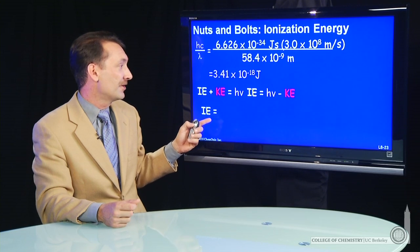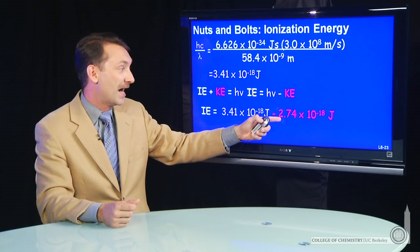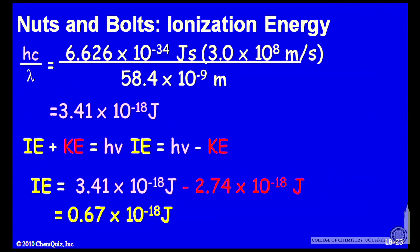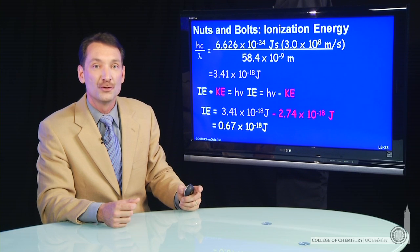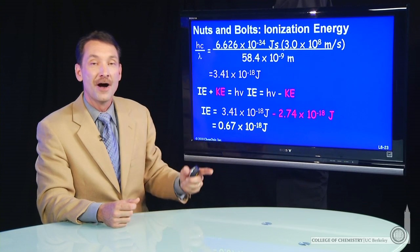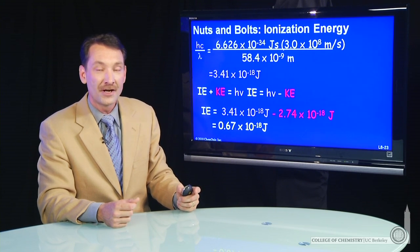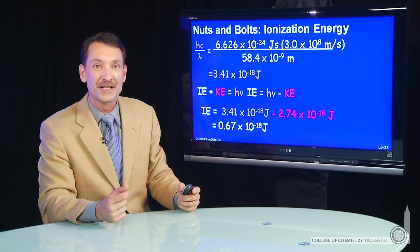And now I can calculate the ionization energy minus the kinetic energy. And for this case, I get a photon energy minus kinetic energy of 0.67 times 10 to the minus 18th joules. So this is the ionization energy of rubidium atoms calculated in a photoelectron spectroscopy experiment.